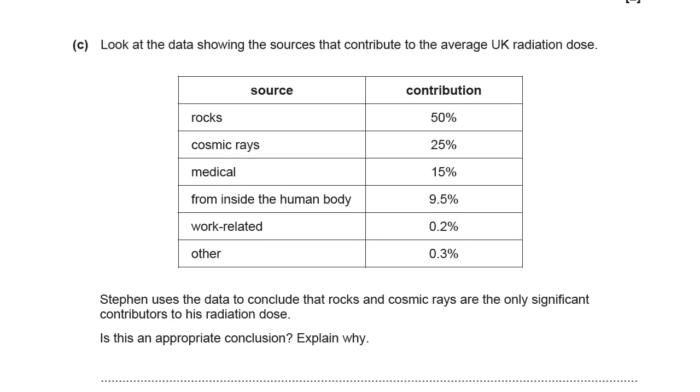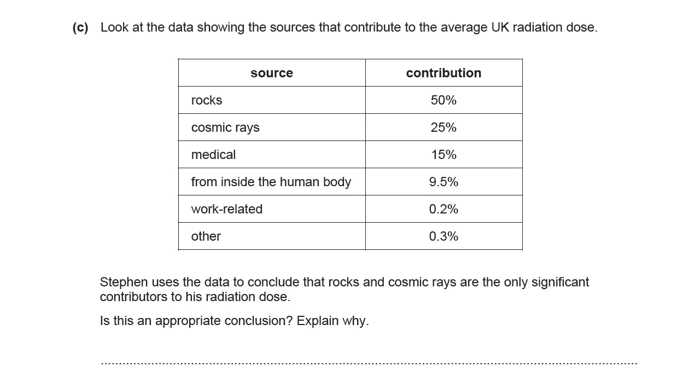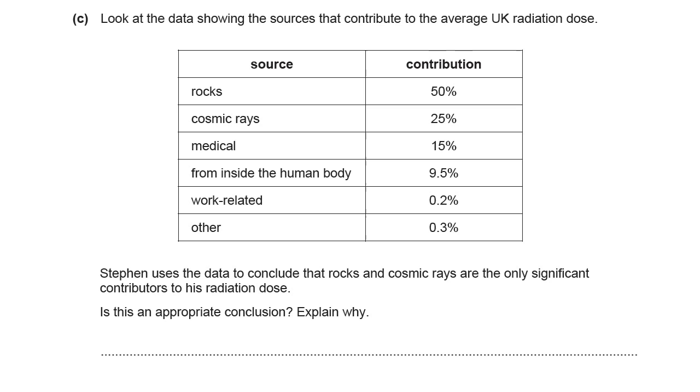Look at the data showing the sources that contribute to the average UK radiation dose. So rocks, cosmic rays, medical, from inside the human body, work related or other. And it tells you their actual percentage contribution. You often see this represented as a pie chart. Steven uses the data to conclude that rocks and cosmic rays are the only significant contributors to his radiation dose.